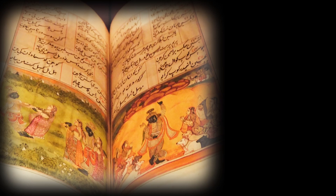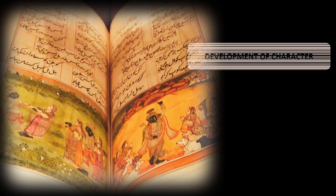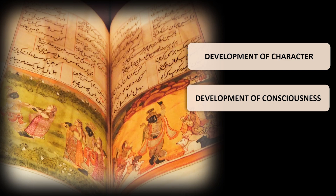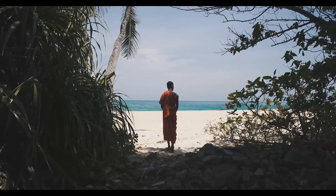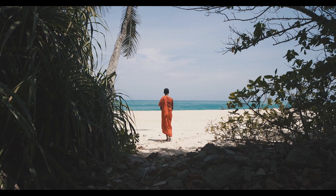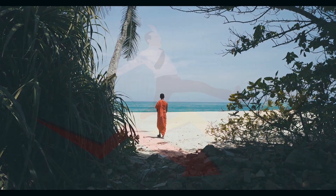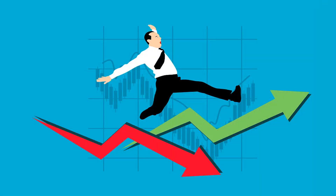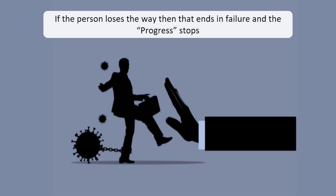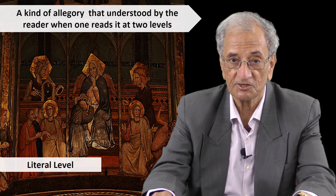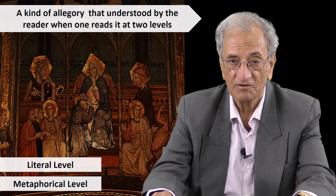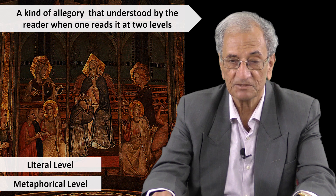Once you think of a pilgrim, you think of an individual who will tend to develop and become rich from the point of view of consciousness and morality. He is on a pilgrimage with a settled destination, and he is progressing toward it. Progress has many hurdles, and the pilgrim has to negotiate, avoid, overcome, and circumvent them. It's a kind of allegory read at two levels: the literal level and the metaphorical level.